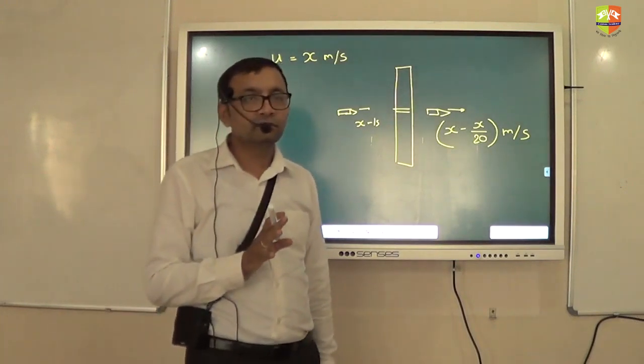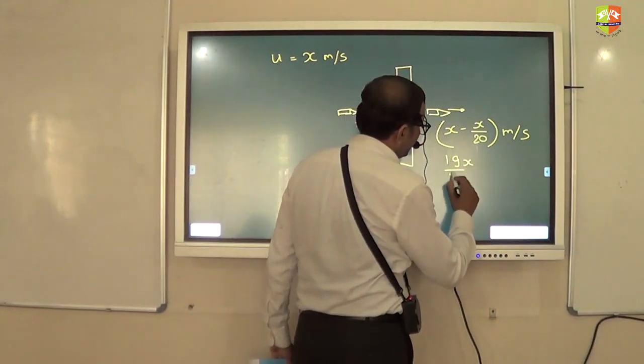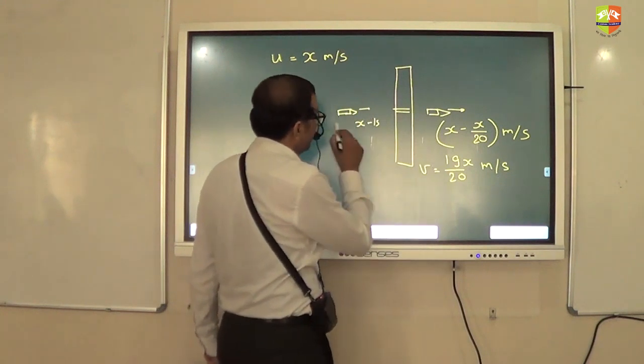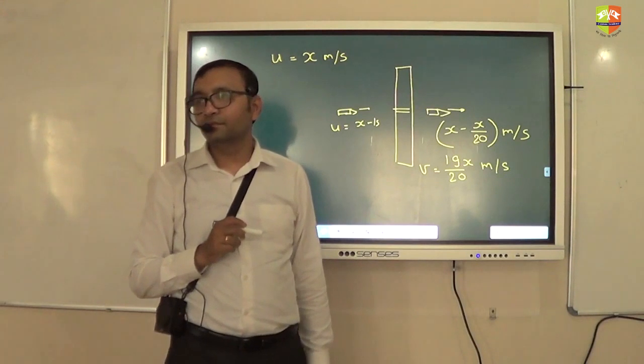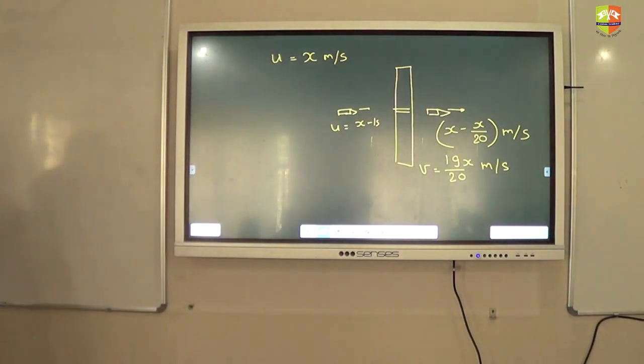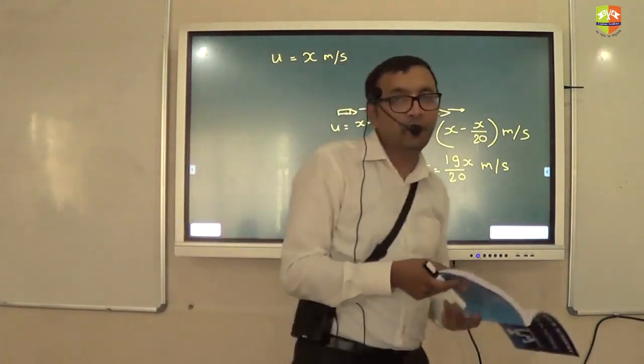How much is this? 19x by 20 meter per second. This much velocity is your final velocity, if this is your initial velocity. Okay? Any doubt? Right? What is asked is find the least number of planes required to stop the bullet.